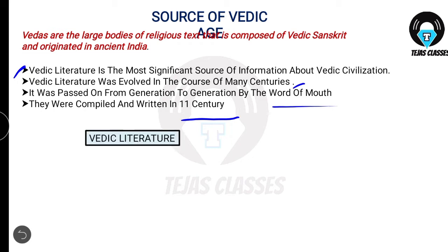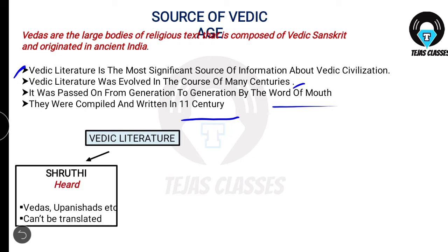Vedic literature is divided into Shruti and Smriti. Shruti means hearing — the early Vedic people recited these Vedas, and the next generation heard and remembered them. Examples include the Vedas and Upanishads, which cannot be translated. For example, the Gayatri mantra cannot be changed — it must be recited as it is in Sanskrit. Smriti means remembering — the authors of epics like Puranas, Ramayana and Mahabharata recorded what they remembered, and these can be translated and modified. Brahmins recite the same slokas everywhere, while epics like Mahabharata differ from one telling to another.